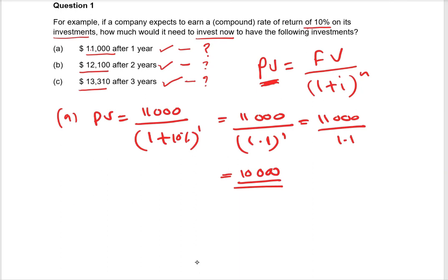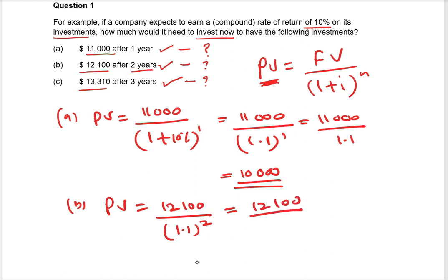The second part: you need to identify the present value to earn twelve thousand one hundred — the future value — after two years. At the rate of 10%, so 1.1 to the power two: twelve thousand one hundred divided by 1.1² equals twelve thousand one hundred divided by 1.21, which gives you ten thousand. So you need to invest ten thousand dollars.